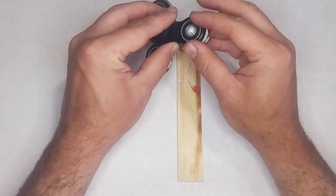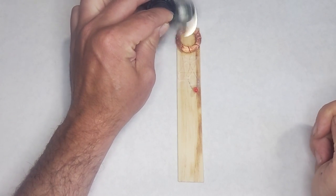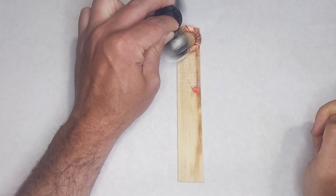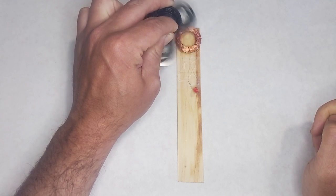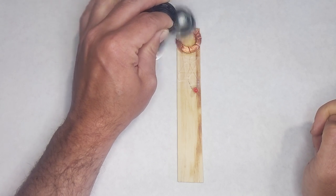To get the generator to work, we need to spin the fidget spinner and then hold it near the copper coil. If the fidget spinner is too far away, it doesn't work. And if it's moving too slow, it doesn't work.